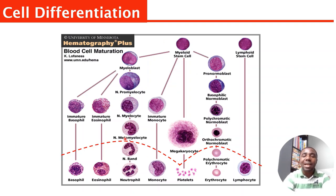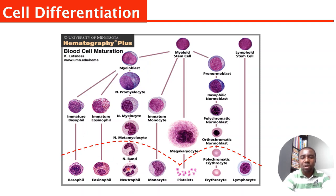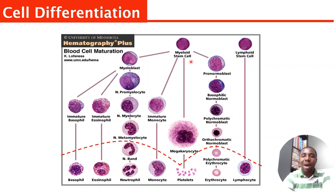Under the myeloid, the cells will differentiate into other parts of the blood cells — whether it's red cells, monocytes, eosinophils, basophils, platelets, and so on. From the myeloid, they differentiate all through into these mature cells. I want you to pay attention to the area I marked red — anything from here should not be seen in the blood.